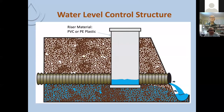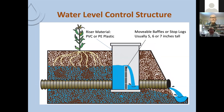The basic water level control structure is usually a PVC or PE plastic structure located at the outlet of the tile drainage main or sub-main. They refer to these as movable baffles or stop logs, but in the Agri-drain you can put in these watertight baffles either five, six, or seven as tall so that you can adjust it to whatever elevation you want based on the depth. They are made out of plastic and depending on how you set them, you can control what the water level would be held at in the root zone of the crop.